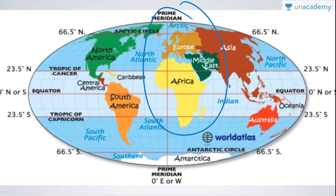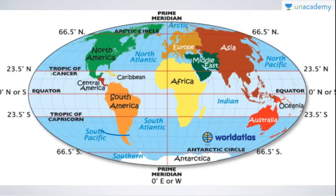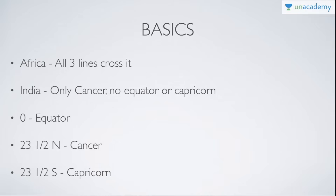The Tropic of Cancer passes through the maximum number of countries — roughly 15. You don't need to remember all 15 of them, but the Tropic of Cancer passes through eight Indian states, so those become very very important to remember.